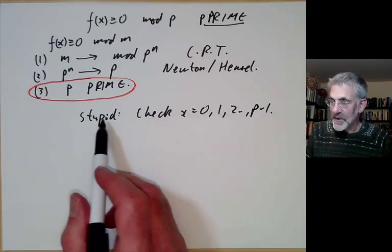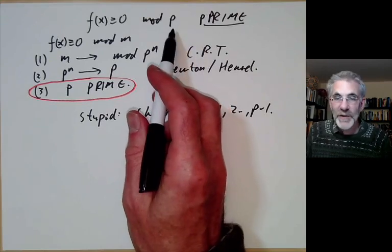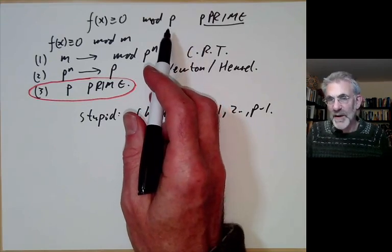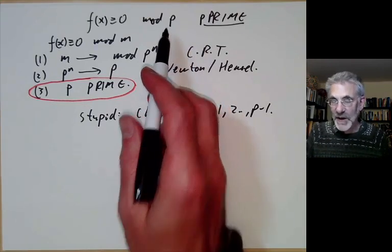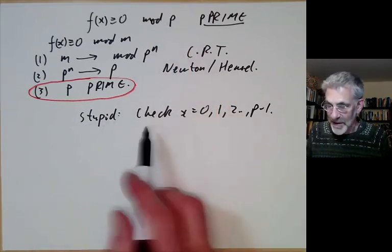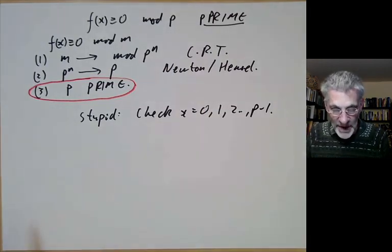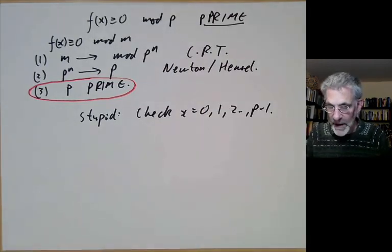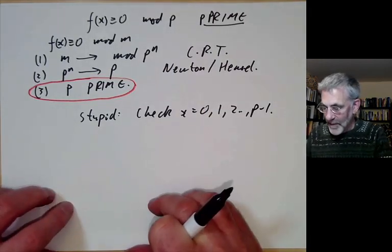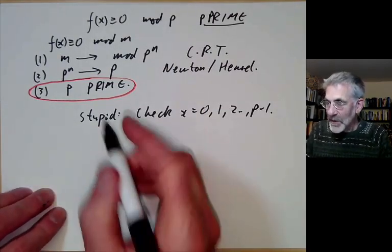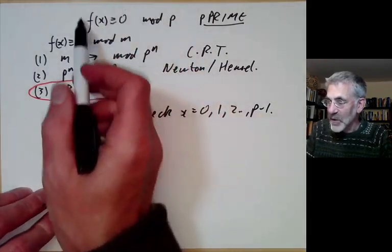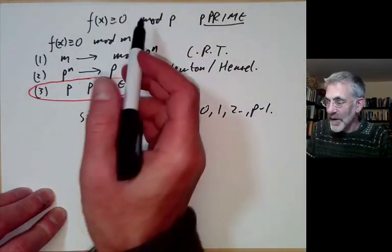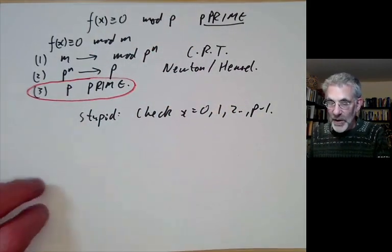This is fine if p is small — less than about 10 if you're doing it by hand, or maybe less than a million or a billion if you're doing it by computer. But it's quite hopeless if p is really large, maybe with 100 digits. So we want to find methods for solving this equation even when p is a really large prime.